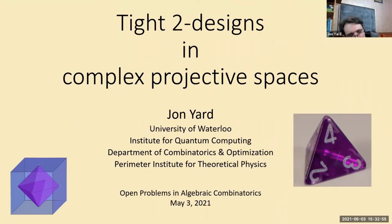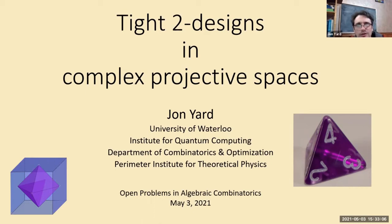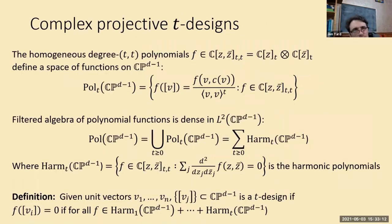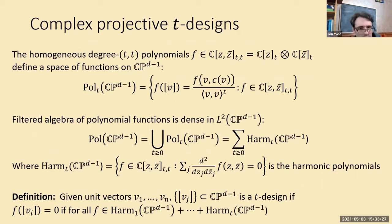I'll talk about the problem of equiangular lines. We know this problem by many different names. The name I chose almost at random for the title was 'tight two-designs in complex projective spaces.' This space can be looked at as an association scheme, and since everybody's mentioning those today, I might as well mention it here too.